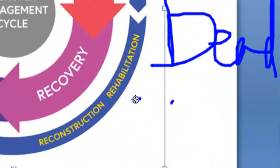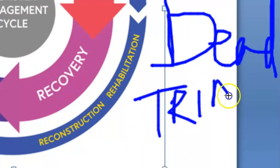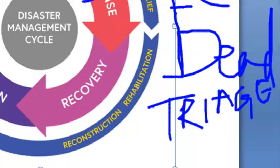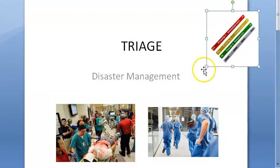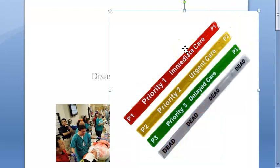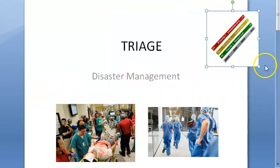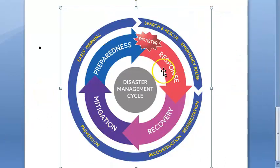Also under the response phase is triage — prioritizing treatment based on severity of injury. Priority one is red for critically ill patients. Priority two is yellow for moderately ill patients. Priority three is green for ambulatory patients with minimal risk. Priority four is black for the dead or moribund patients.